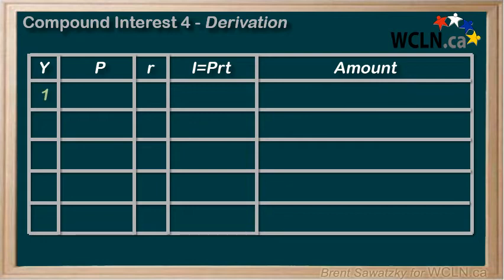Year 1. We'll call the principle P, we call the interest rate R, and therefore, simple interest formula I equals PRT. Now, the amount at the end of year 1 would be our original principle plus the new interest, which we can just call PR. The T will always be 1 in this situation, and we can factor out the P.